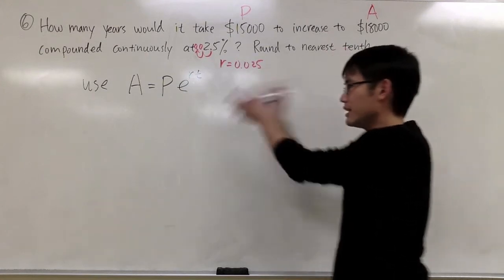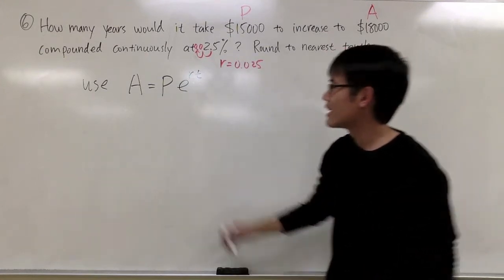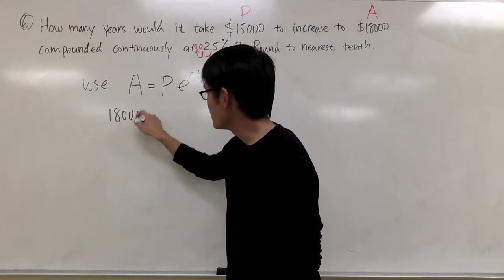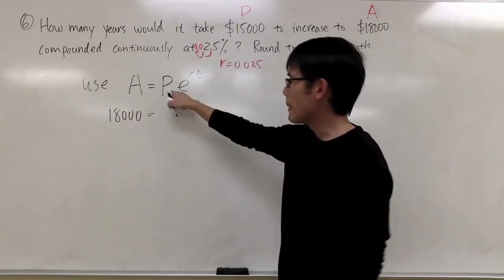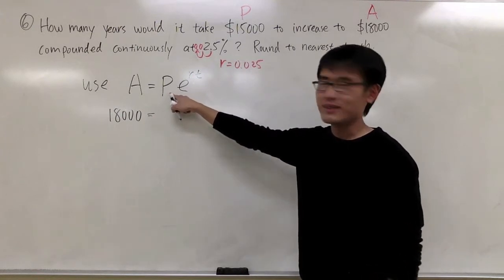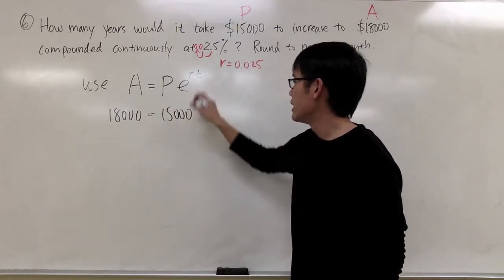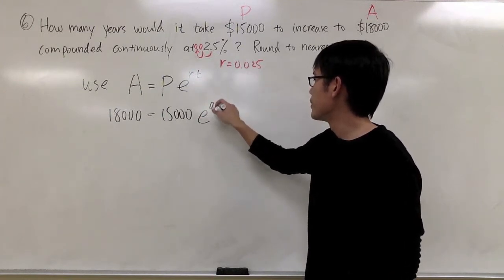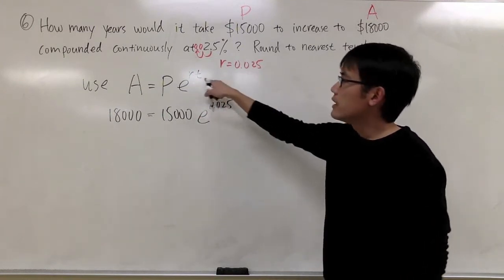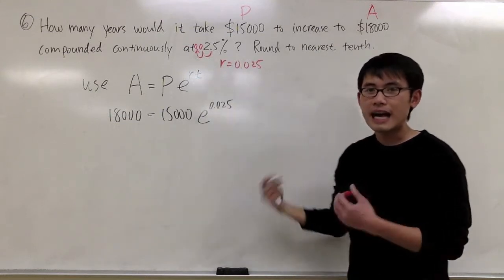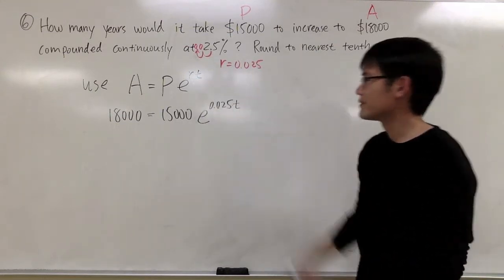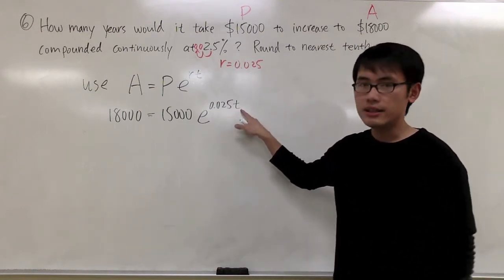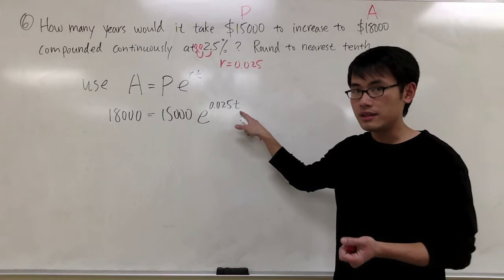Plugging all the numbers into the formula. A is $18,000 equals to P is $15,000, and e is just the e. R is 0.025, and the t we don't know. That's how many years it will take, and that's what we're trying to solve.